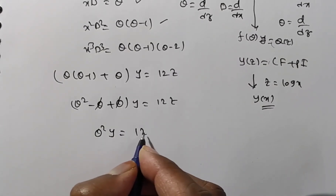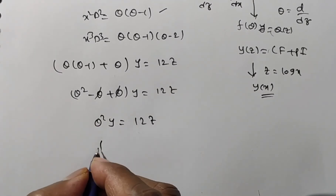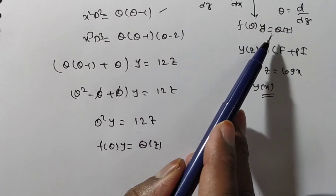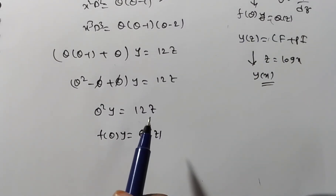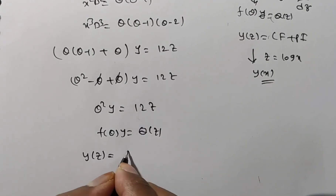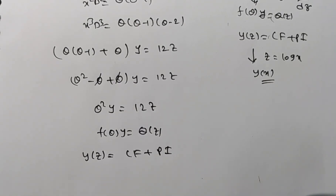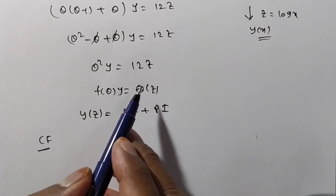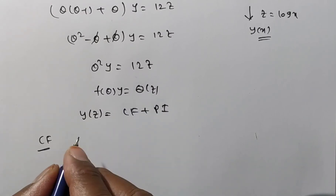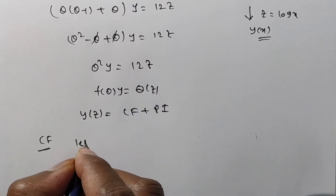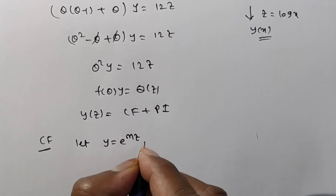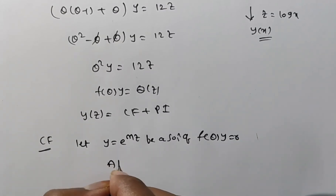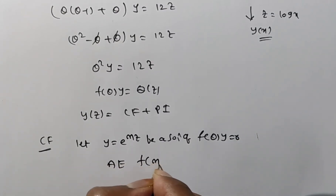We now have θ²y = 12z, which is of the form f(θ)·y = Q(z). The general solution is y(z) = complementary function + particular integral. To find the complementary function, we set Q(z) = 0 and let y = e^(mz) be a solution of f(θ)·y = 0, leading to the auxiliary equation f(m) = 0.